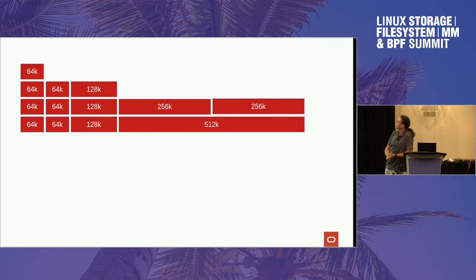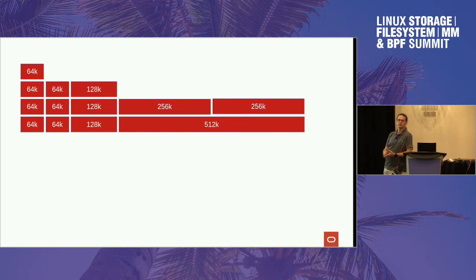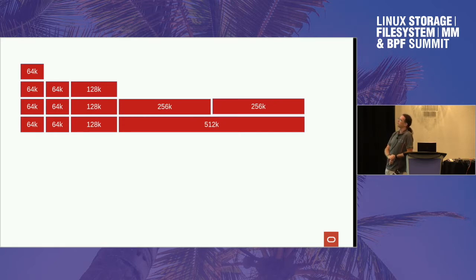The network people seem more interested in making sure this stuff works well for them than the block storage people do. Block people seem to just say the page cache sucks, never mind — I will do all my testing using direct I/O. That's the part of the system they can affect. Block file system people tend not to venture into the page cache and say, hey, this sucks, this needs to get fixed.